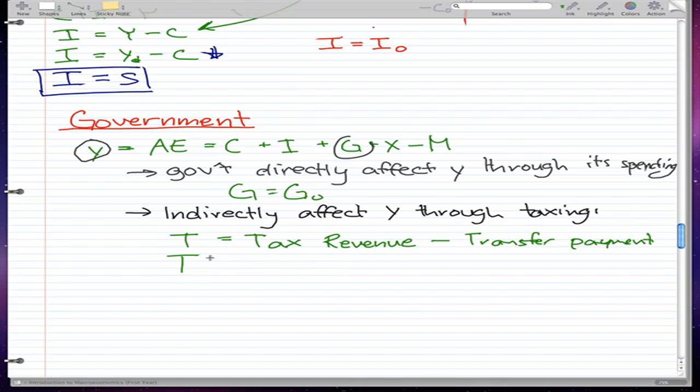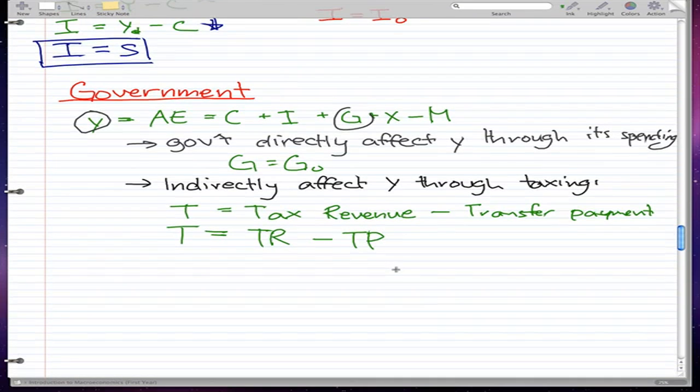T is equal to TR (tax revenue) minus TP (transfer payments). This equals tY, which should look familiar.